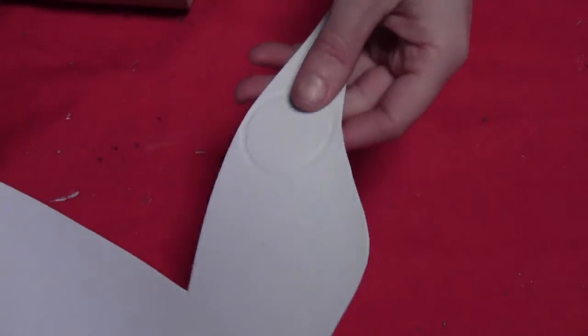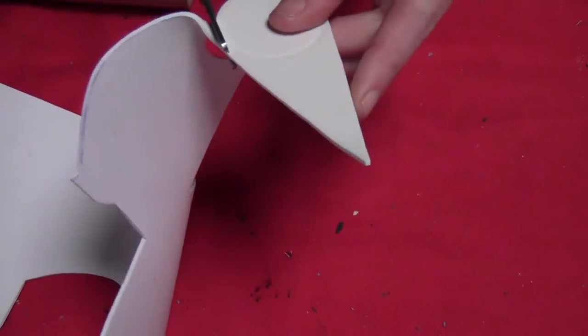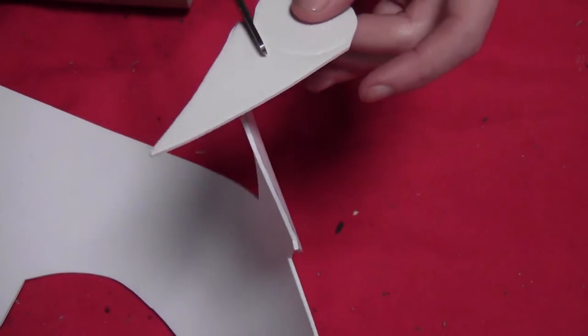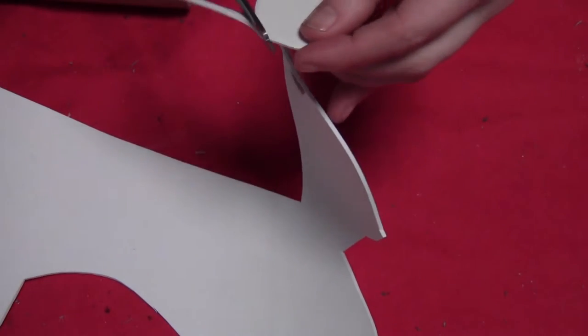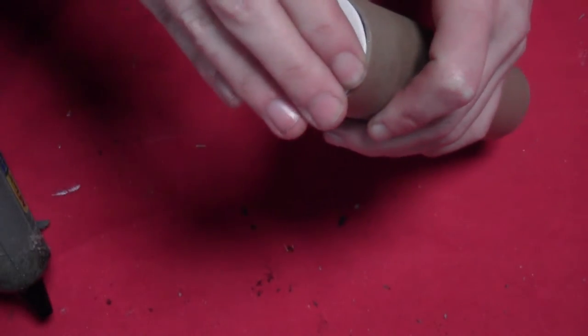Then you just want to push the end of the tube into some craft foam so you get the indentation. You just want to cut out the resulting circle and then glue that right into the end of the tube.